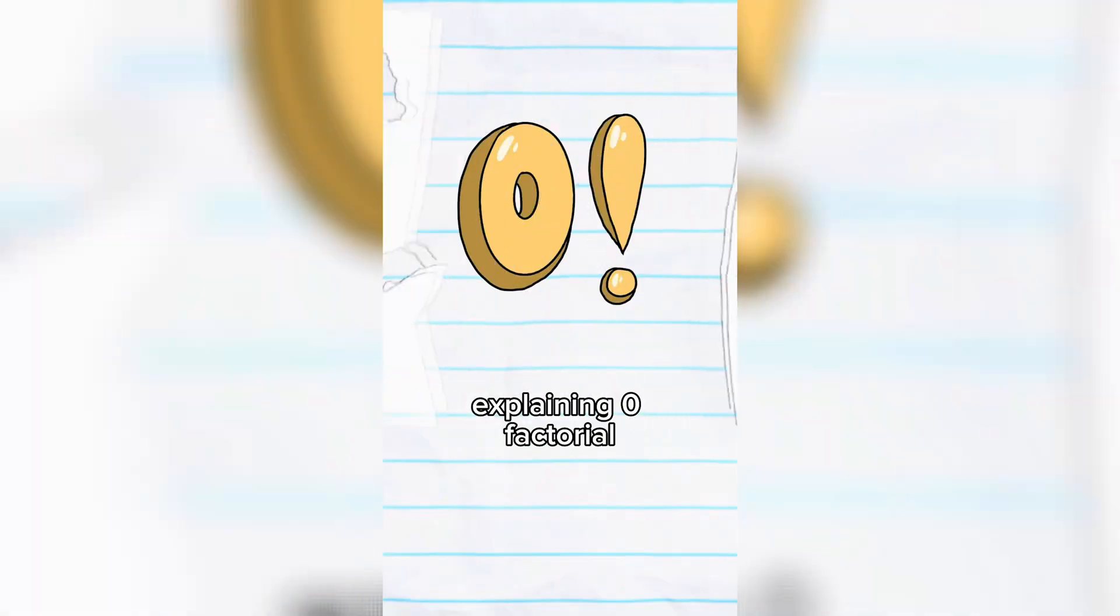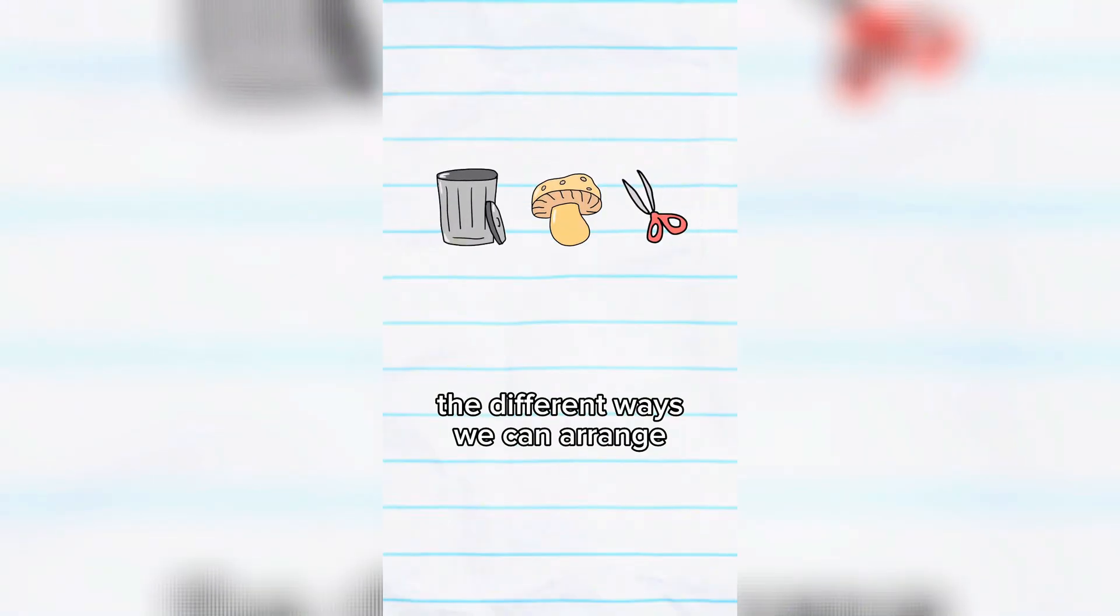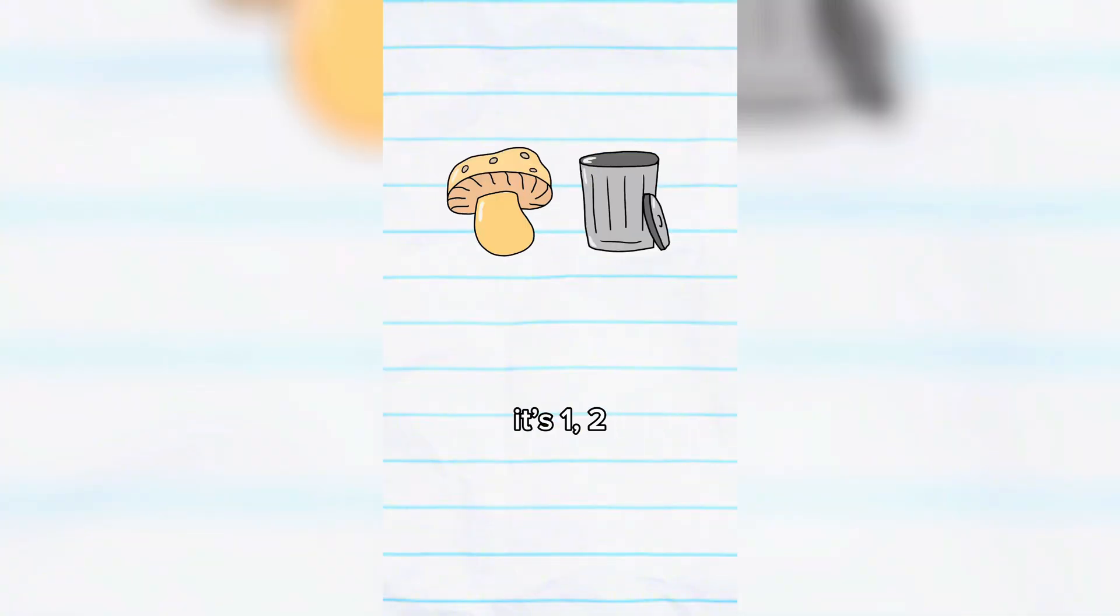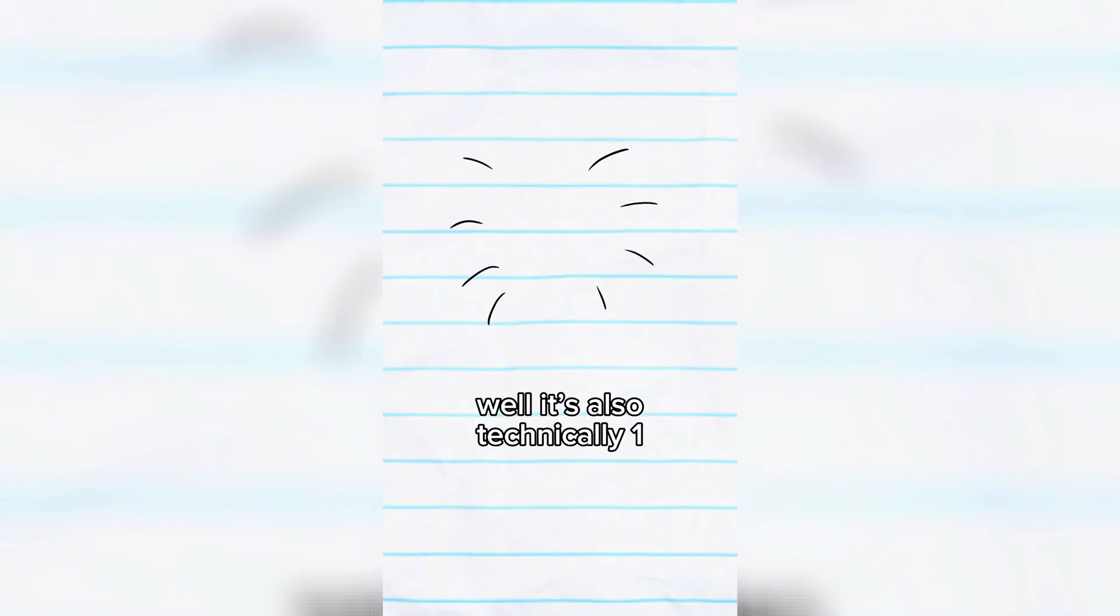That's okay, because we have another way of explaining 0 factorial with objects. Let's say we have 3 objects. The different ways we can arrange these objects is 1, 2, 3, 4, 5, 6. For 2 shapes, it's 1, 2. For 1 shape, it's 1. And for 0 shapes, well, it's also technically 1.